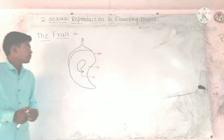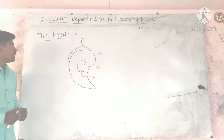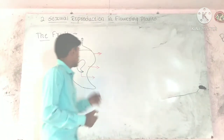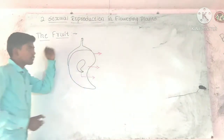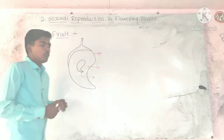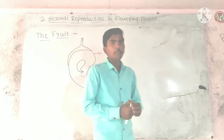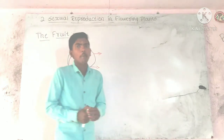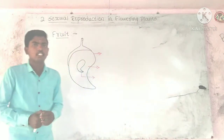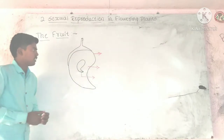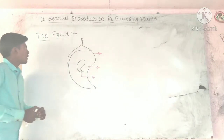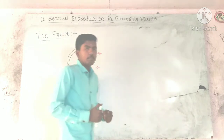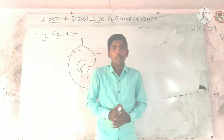In this video I am going to start with the last topic, that is the fruit. You already learned in the 5th chapter about flowering plants. Fruit is the characteristic feature of the flowering plants.